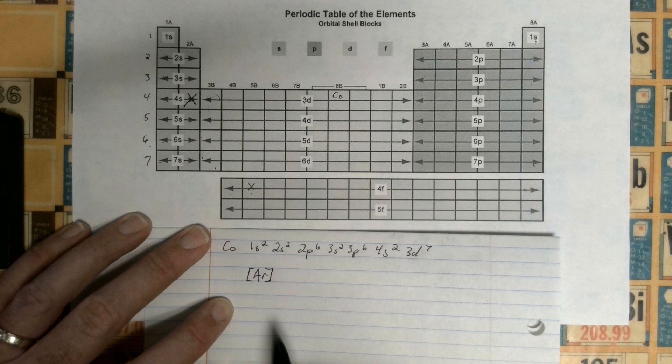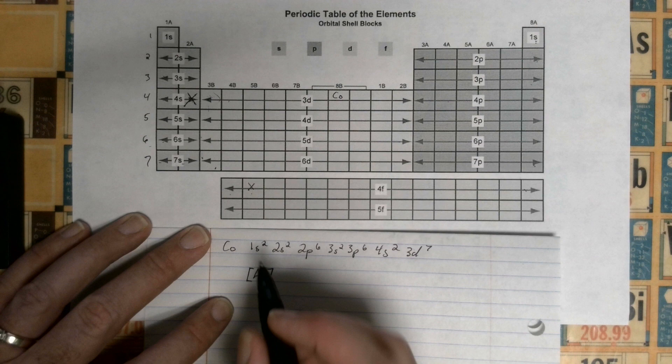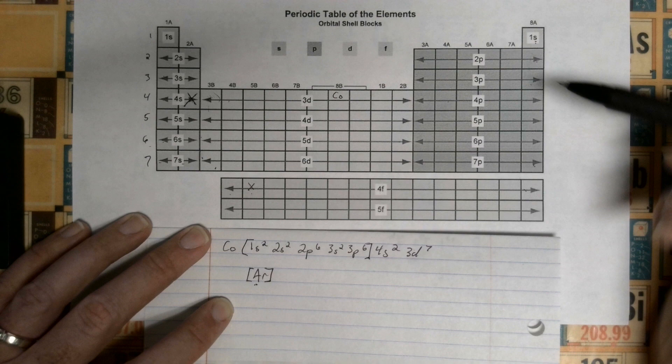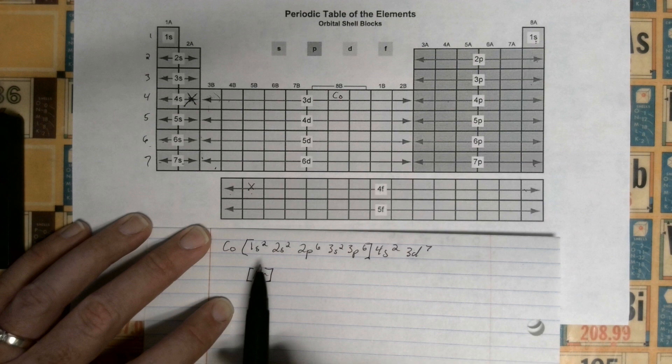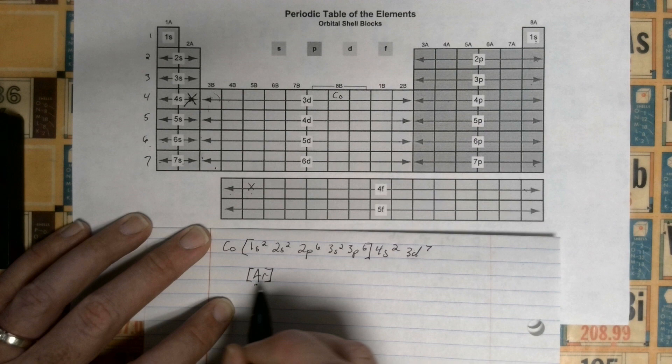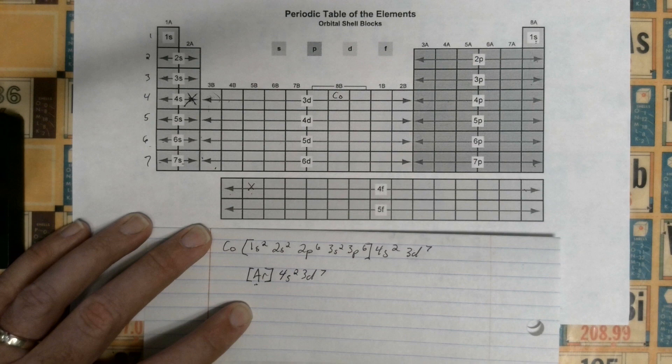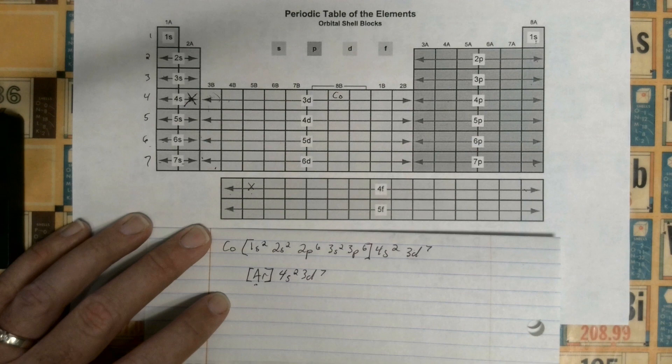What that means is, if you look at Cobalt's electron configuration, this right here is the same exact electron configuration that Argon has. If you notice, Argon ends at 3p6, so it ends right there. Basically, what we're saying is Cobalt has the same electron configuration as Argon plus these. So what we do is we put Argon in brackets, and then we write whatever is after Argon. So all we would write is [Ar] 4s2 3d7.